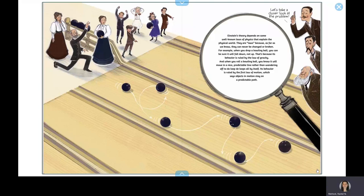And when you roll a bowling ball, you know it will move in a nice, predictable line rather than wandering off to do loop-de-loops all by itself. Its behavior is ruled by the first law of motion, which says objects in motion stay on a predictable path.